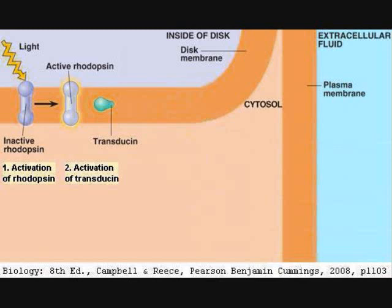The cytosolic G-protein transducin can interact with the activated opsin protein. As a result, transducin releases a bound GDP — that's guanosine diphosphate — and picks up a GTP — that's guanosine triphosphate. This activates transducin.